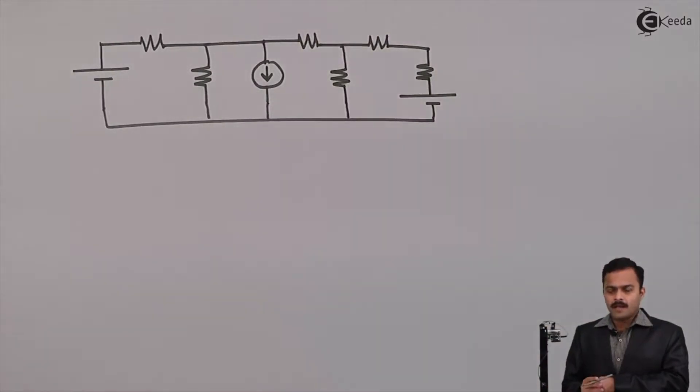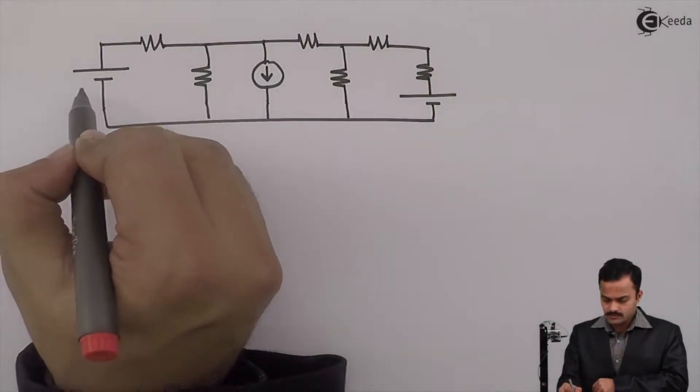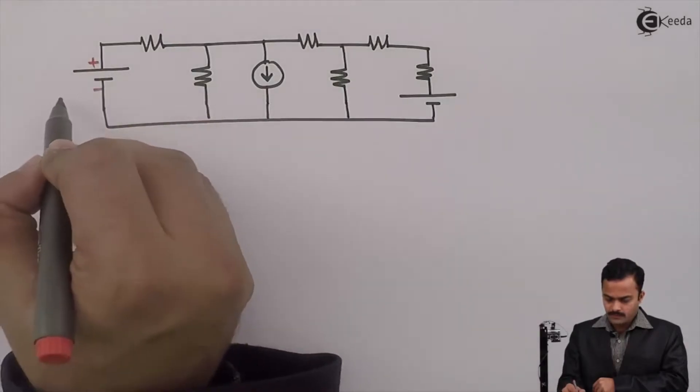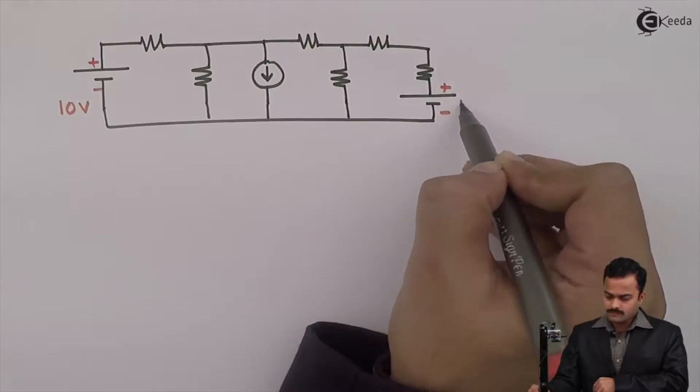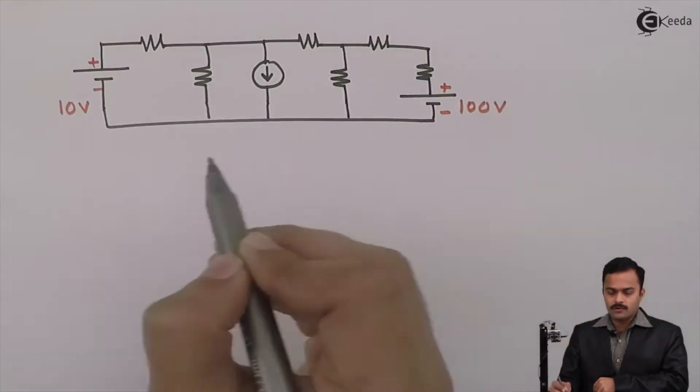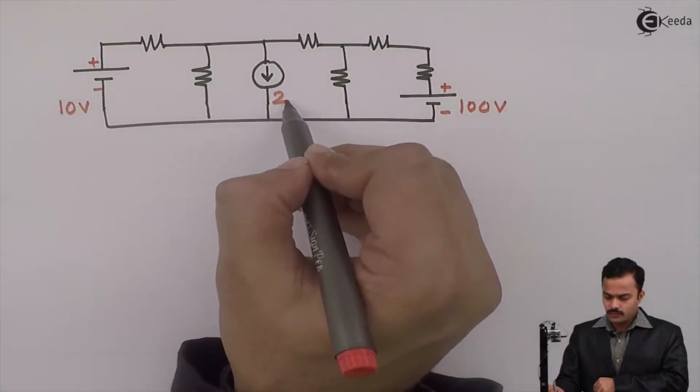So in this circuit, I am having a voltage source of 10V. We have one more voltage source of 100V and a current source of 2 ampere.